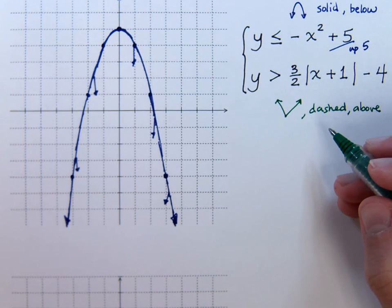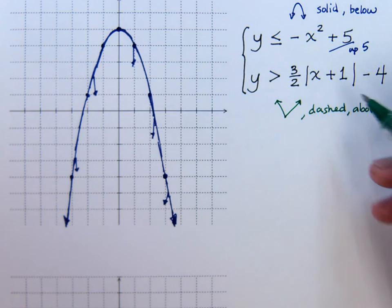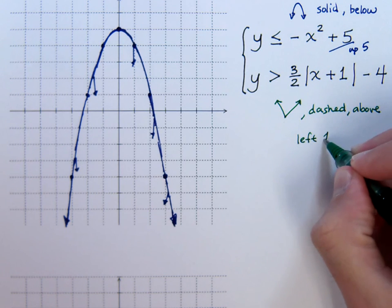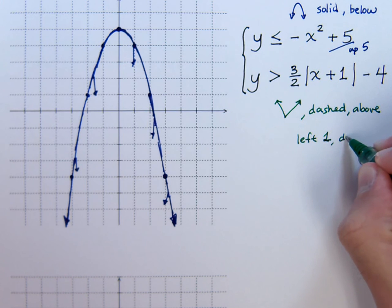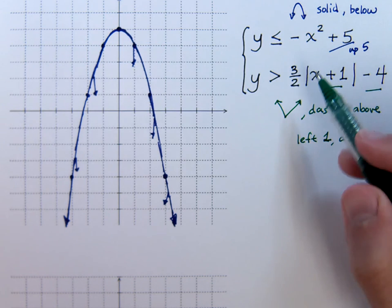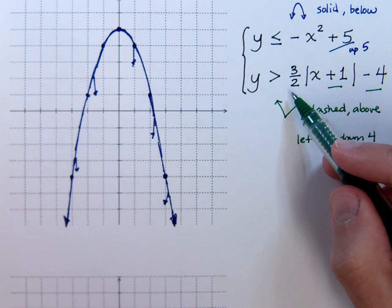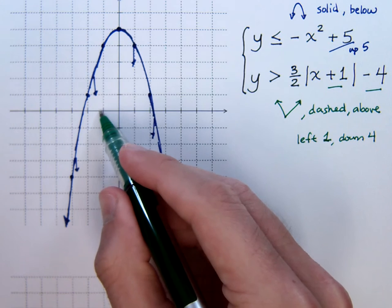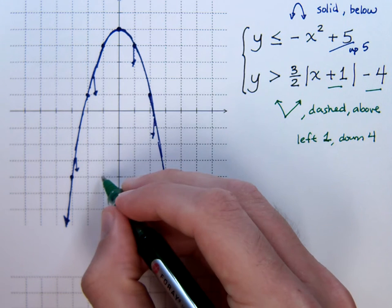The rest of the information here that we have for the absolute value tells me that I need to go to the left one unit and then go down four. The three halves tells me my slope, so I'm going to be going up three and over two. So I'm going to put all this information together. Go to the left one, down four.